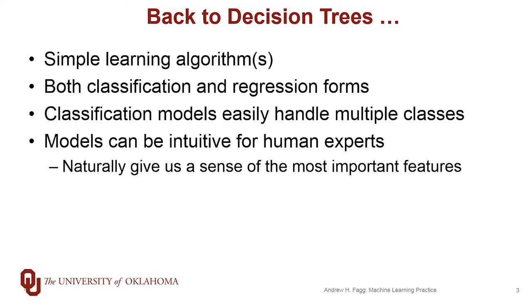Decision trees are also advantageous from the perspective of human experts. This naturally gives them a sense of what the decision tree is actually doing, so they can read the individual questions and confirm that the tree is doing something akin to what the experts might be doing.